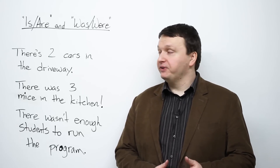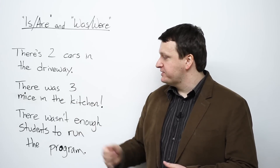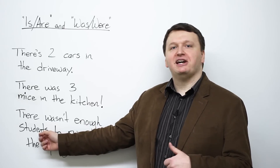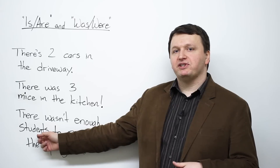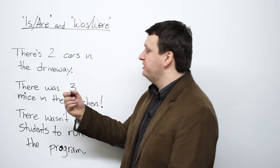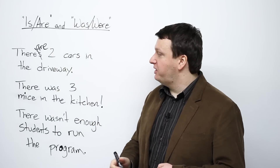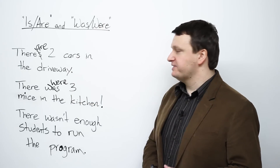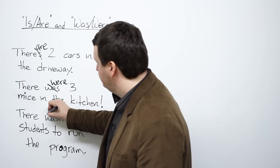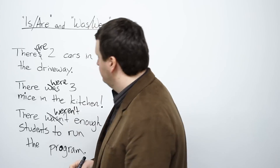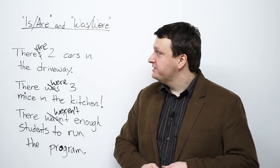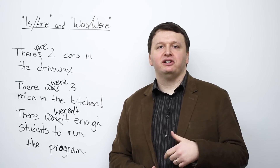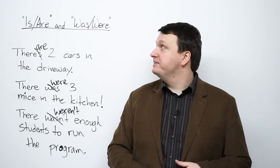All three examples have plurals: two cars, three mice, students. If your noun is plural, you should be using 'are'. So we say 'there are two cars in the driveway', 'there were three mice in the kitchen', 'there weren't enough students to run the program.' So please try and avoid these five mistakes: double negatives, less and fewer, could care less, have went, and is/are/was/were.